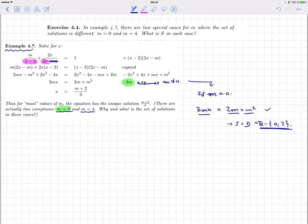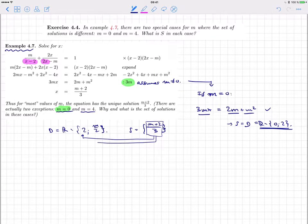Now the second value M equals 4 appears the following way. It also has something to do with the domain we never settled in this case here. So the domain is all of R except 2 and M over 2. When we write that the set of solutions is the unique M plus 2 over 3, we assume that this thing here is neither 2 nor M over 2.